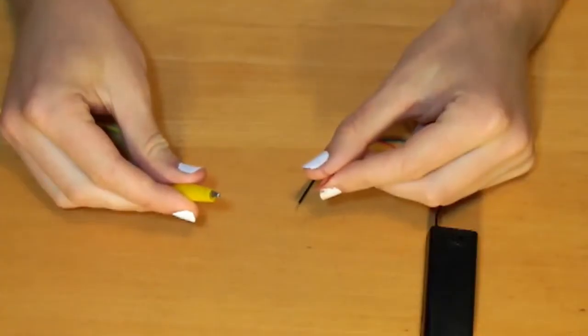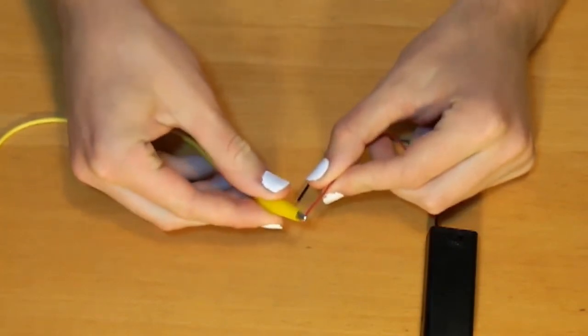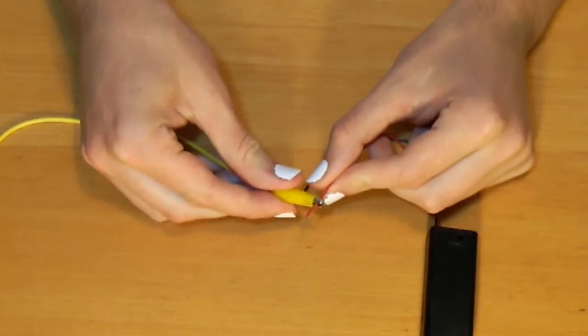When you connect the crocodile leads up to the battery wires, the clips need to be in good contact with the metal parts, not the plastic parts, otherwise the electricity cannot flow.